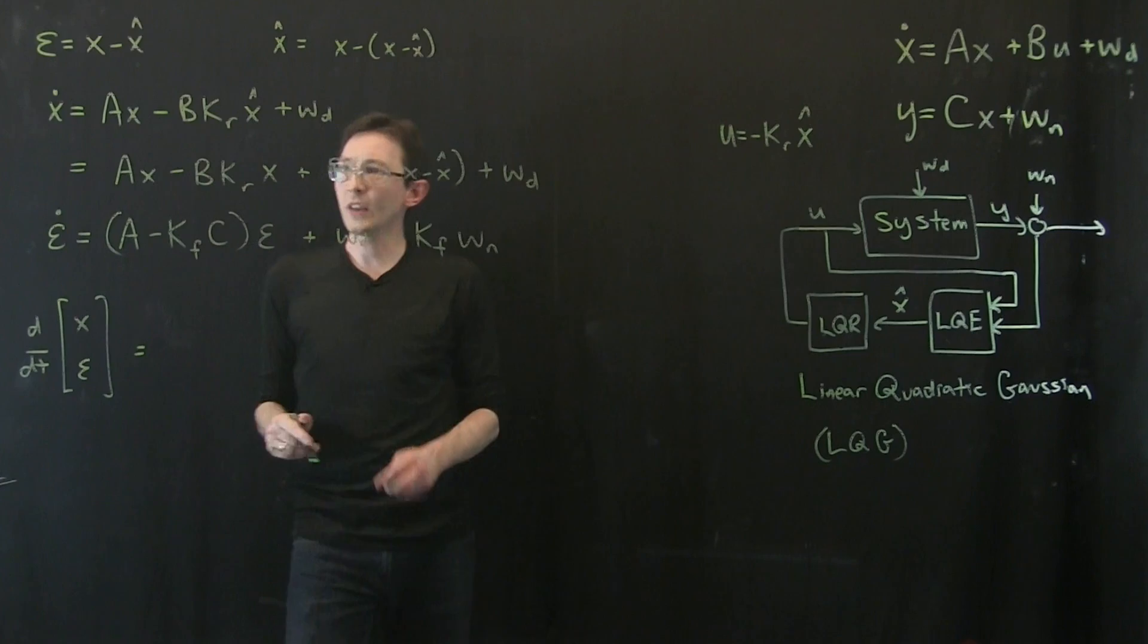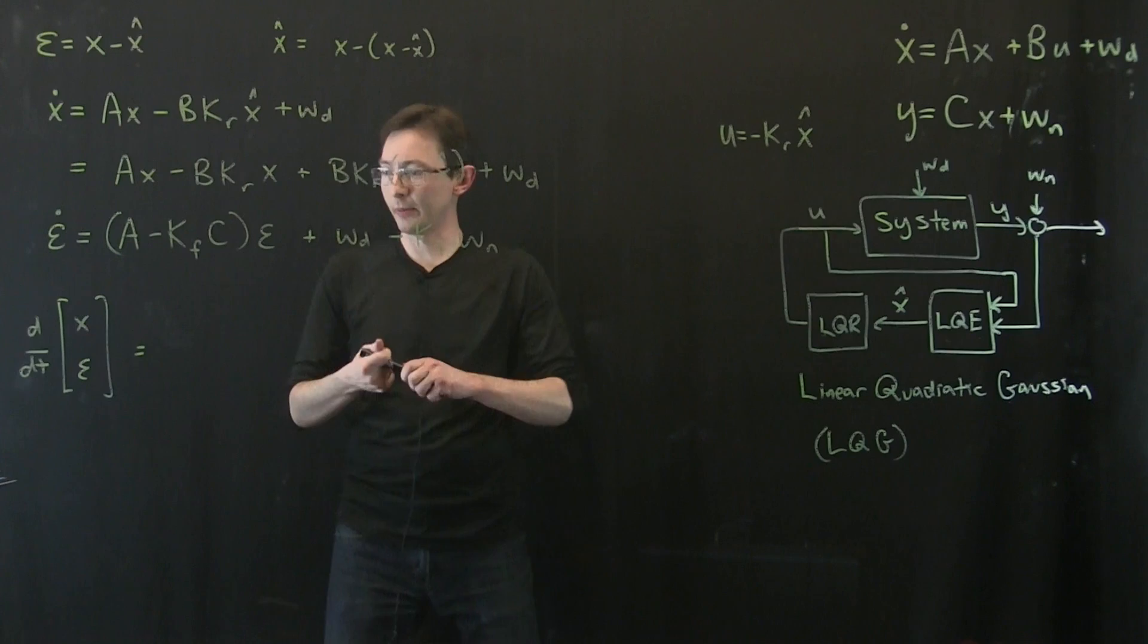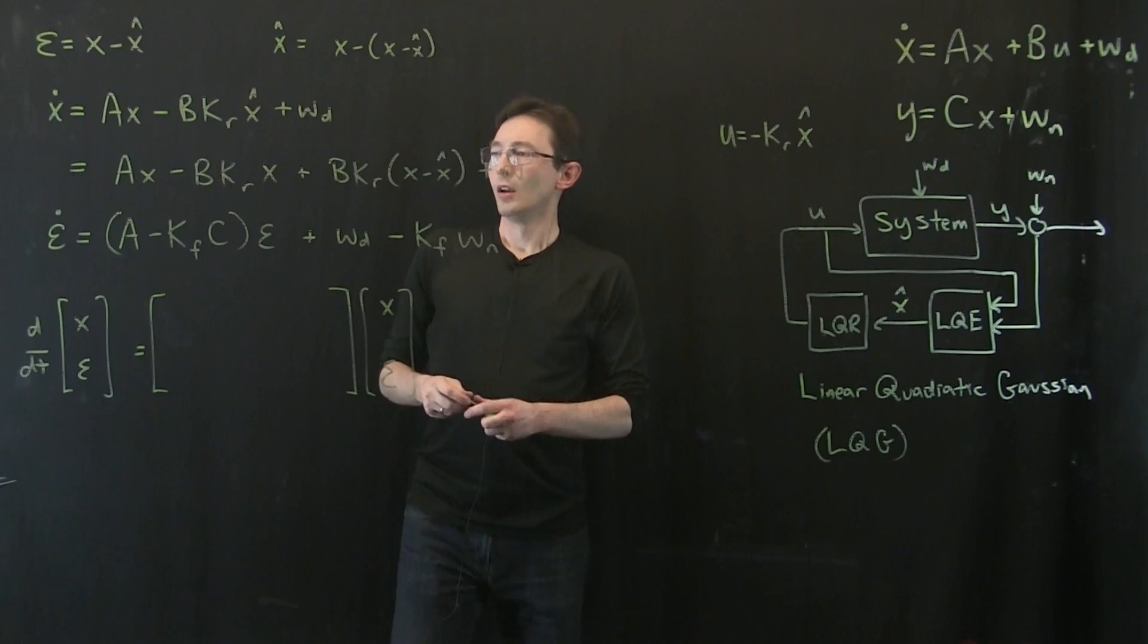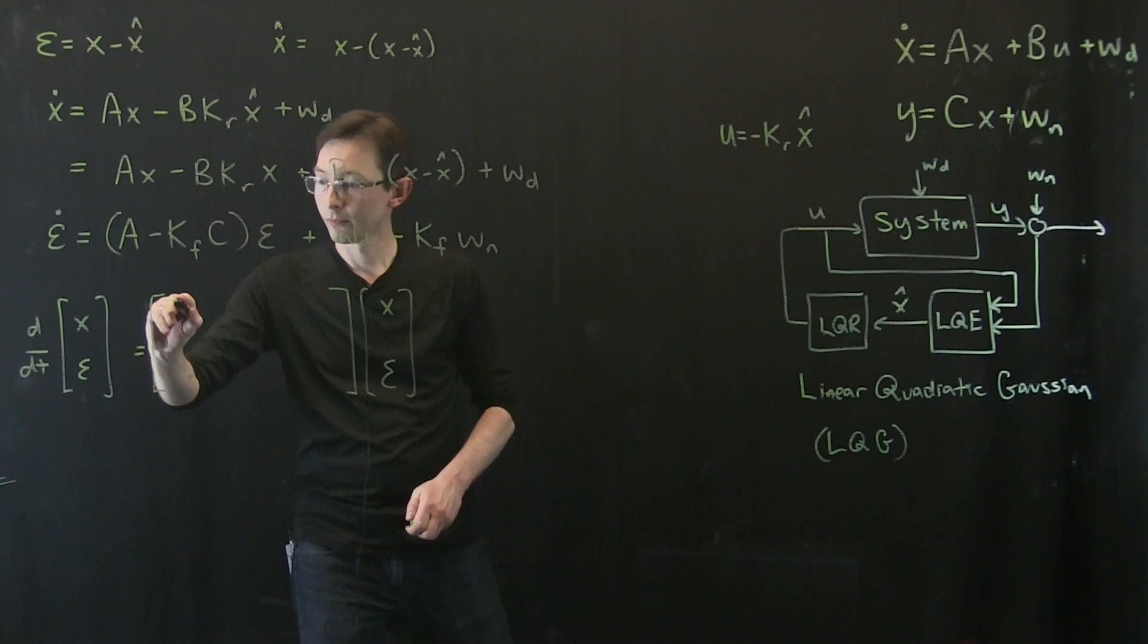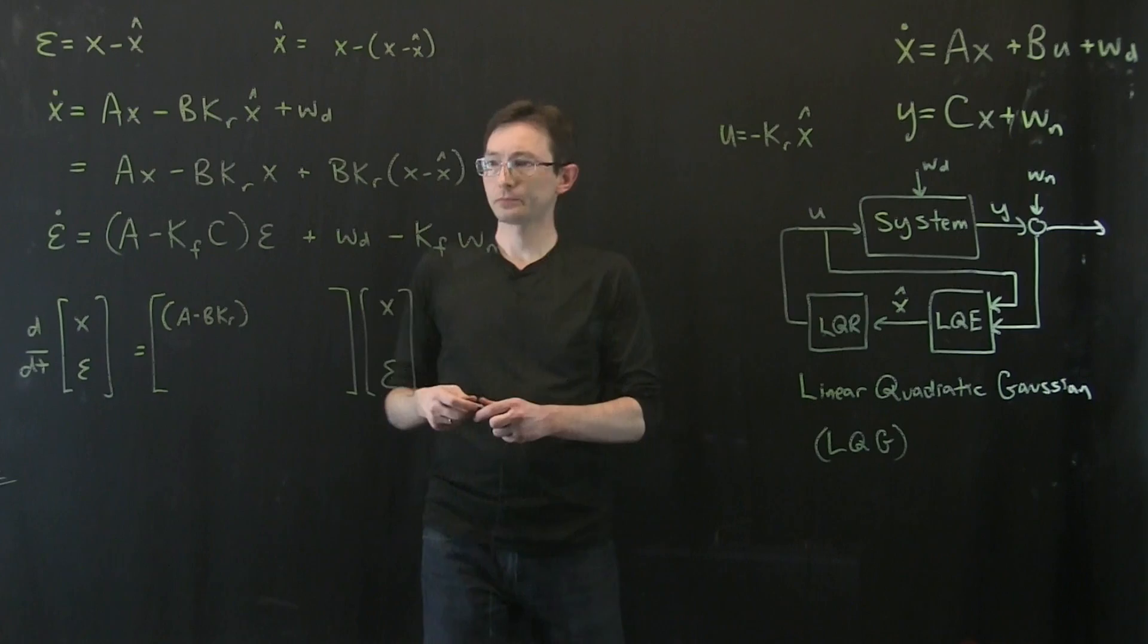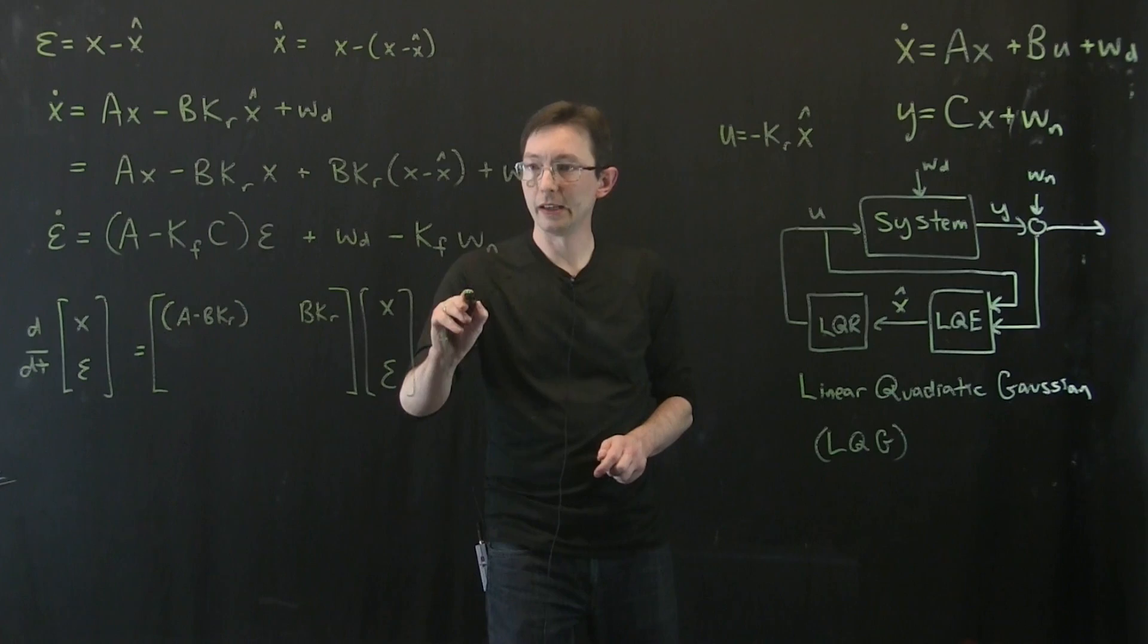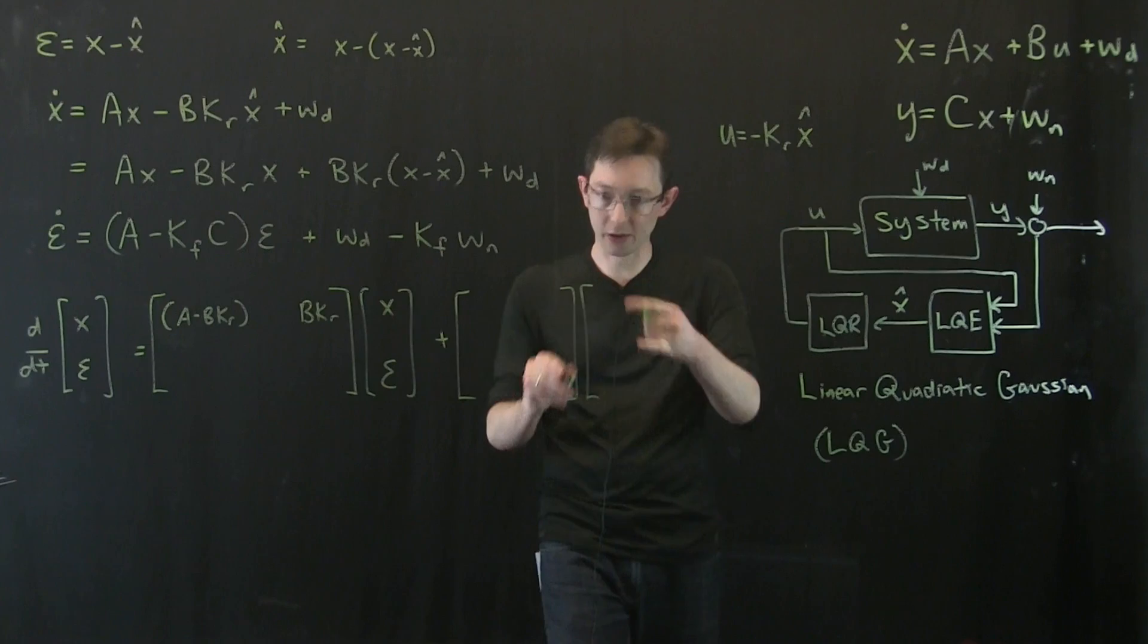And if I write this down, what I have is, okay, so I'm going to write this down as a matrix times, I hope I have enough room here, times x and epsilon. Okay, so x dot equals a minus b kr x. Kr is the Kalman filter. I also have a plus b kr epsilon. So there's a b kr here. And then there is, I'm going to have another matrix times my disturbances and noise.